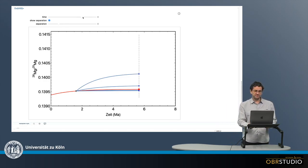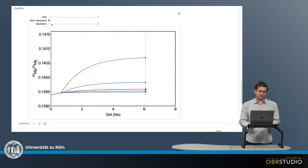The evolution of the various reservoirs, or the ingrowth of radiogenic 26 magnesium in this case, is much smaller than if the separation into the various reservoirs occurs earlier,